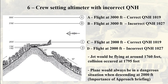Note the schematic on the left. Scenario A shows the jet at 3,000 feet with the correct QNH. Scenario B shows flight at 3,000 feet with the incorrect QNH, where there wouldn't have been any major consequences. Scenario C displays the airplane at 2,000 feet on the correct QNH — taking into account the jet's impact location and the trees on top of the crest, it can be presumed the aircraft would still have cleared the terrain. Scenario D, combining descent to 2,000 feet with the incorrect QNH, placed the jet at around 1,760 feet; the collision occurred at around 1,795 feet. Investigators noted the aircraft would always be in a dangerous situation when descending at 2,000 feet, leading once again to the importance of the approach briefing.